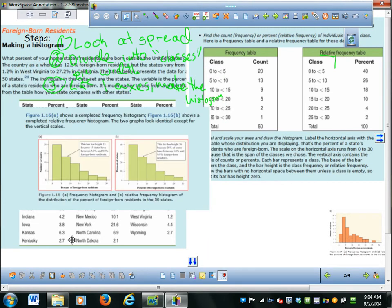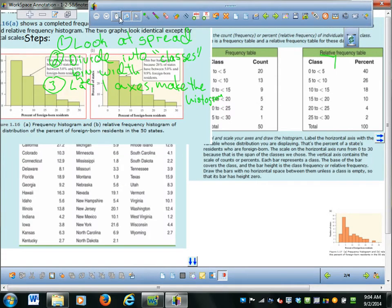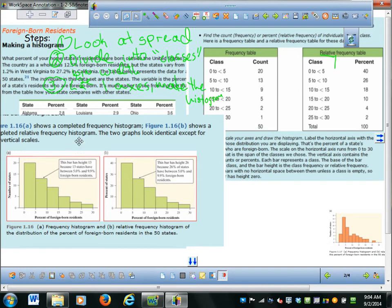So they take the data and they make their little histogram. So you can see this is a graph, a histogram with the percent of foreign-born residents. And this is the number of states. So 20 of the states have between zero and five percent of their students, residents were born there. And between five and 10, that's where 13 states, and so on. And then they computed the same thing with percentages, and notice it looks exactly the same except over here we have percents, and over here we have the count.